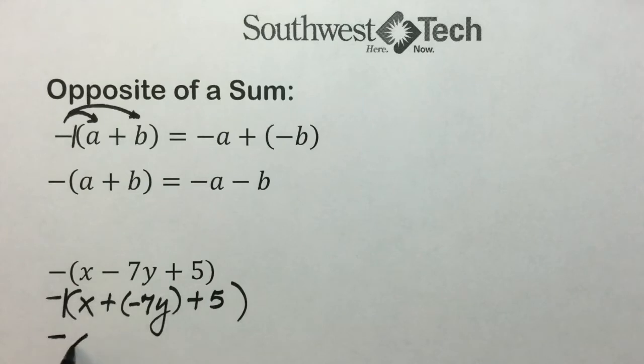Negative 1 times x is negative x. Negative 1 times negative 7y results in positive 7y. And negative 1 times 5 results in either plus negative 5 or simply minus 5. If you look at the original quantity within the parentheses, we have exactly the opposite sign on each one of those terms because of distributing the negative 1.